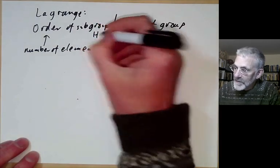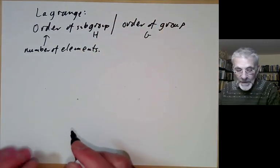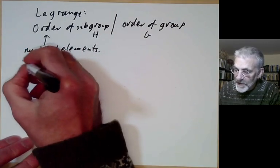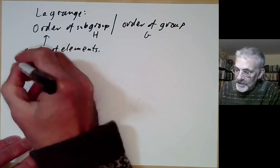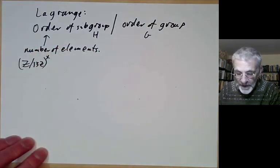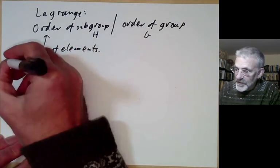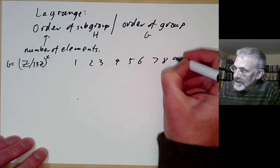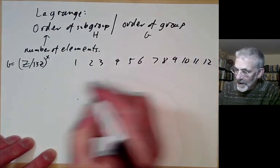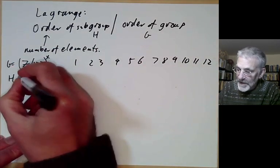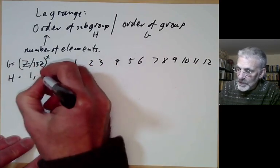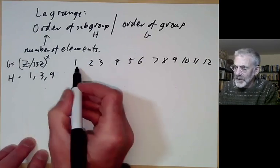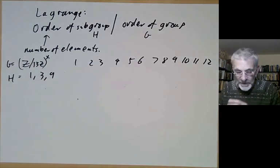Let's call the subgroup H and the group G. Take the group of integers modulo 13 under multiplication as our group G. It has elements 1 through 12. We take our subgroup H to be the three elements 1, 3, and 9. You can see 3 times 9 is 27, which is congruent to 1 modulo 13. So this is a little subgroup of order 3. As well as the subgroup H, we can multiply everything in H by 2 — call that 2H, which gives us 2, 6, and 18, where 18 is 5 modulo 13.